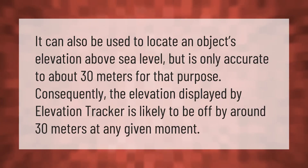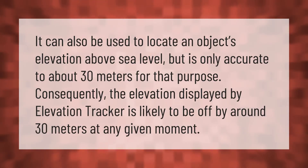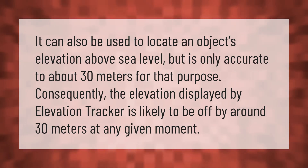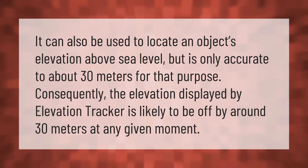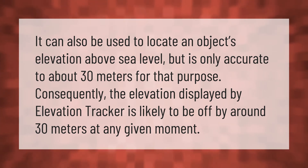GPS can also be used to locate an object's elevation above sea level, but is only accurate to about 30 meters for that purpose. Consequently, the elevation displayed by an elevation tracker is likely to be off by around 30 meters at any given moment.